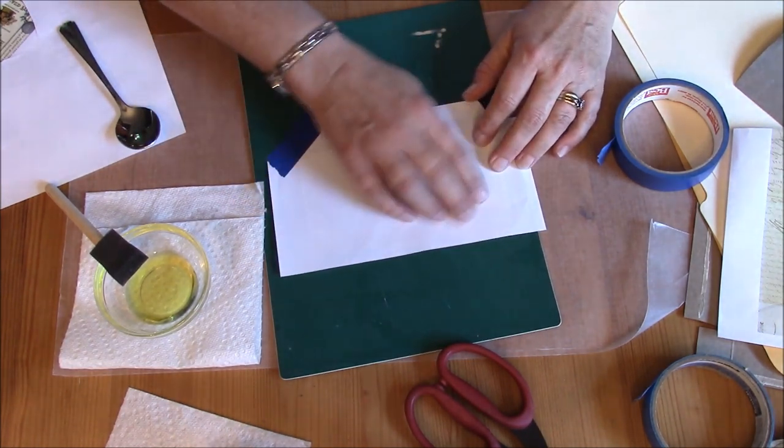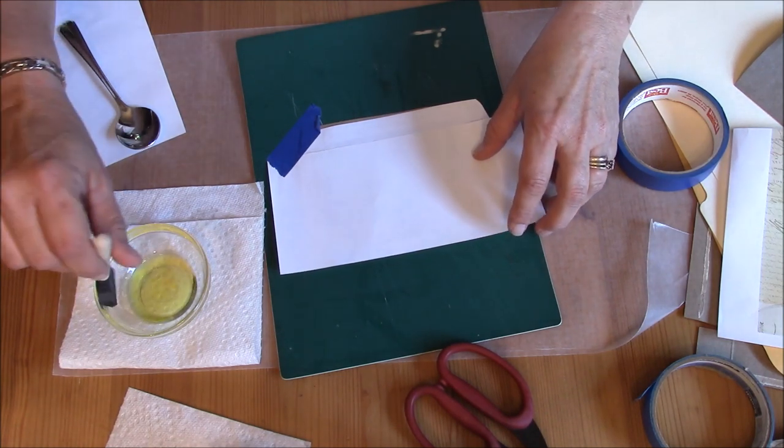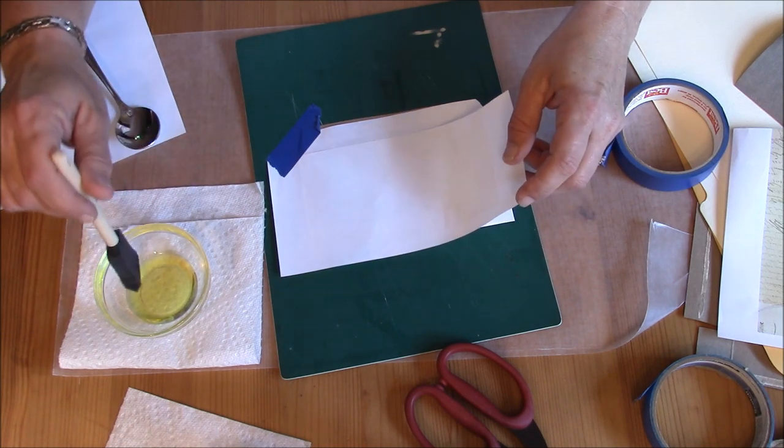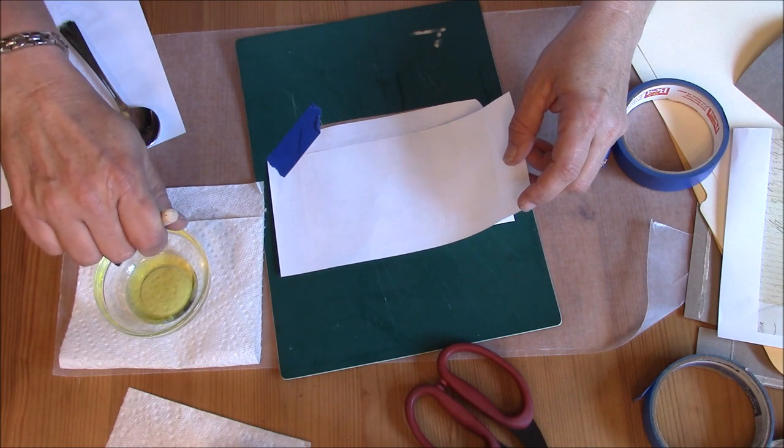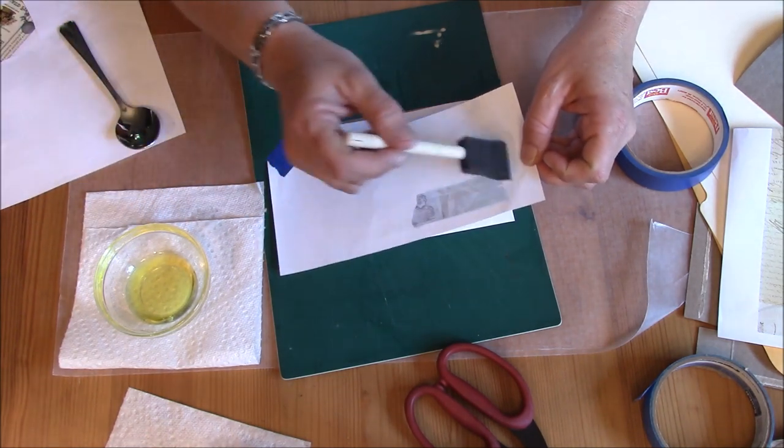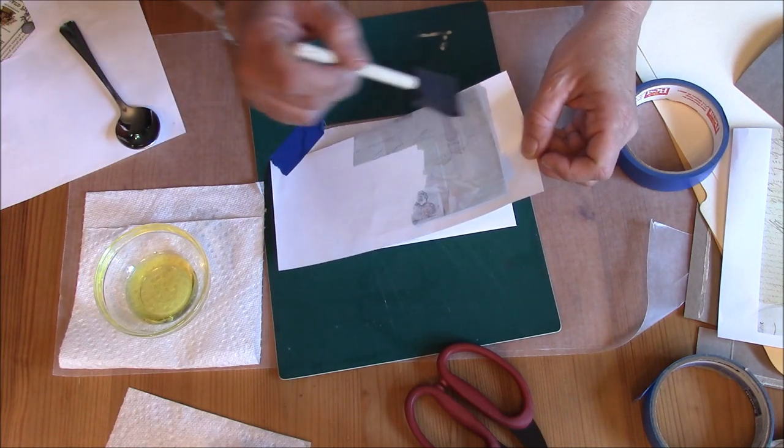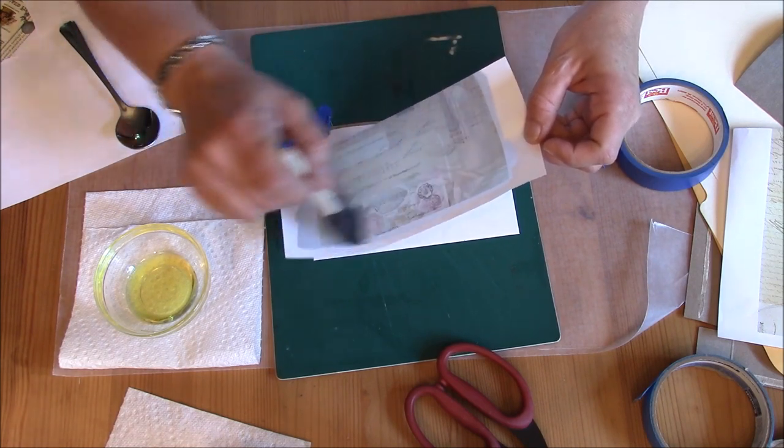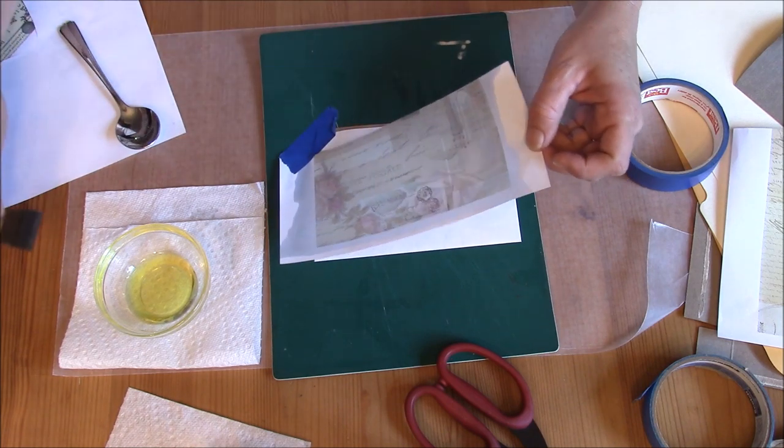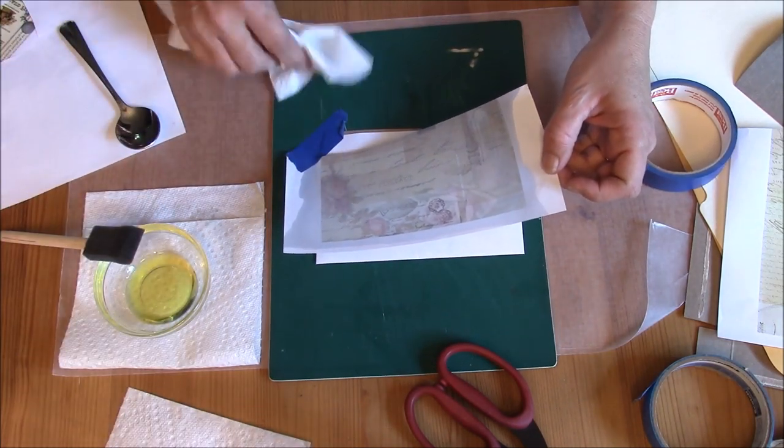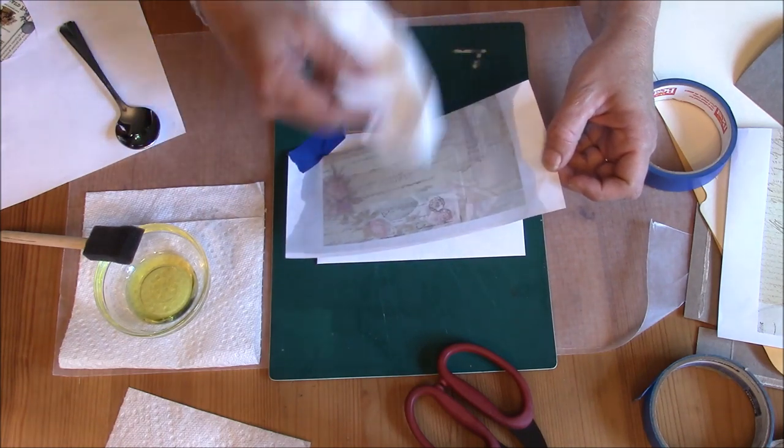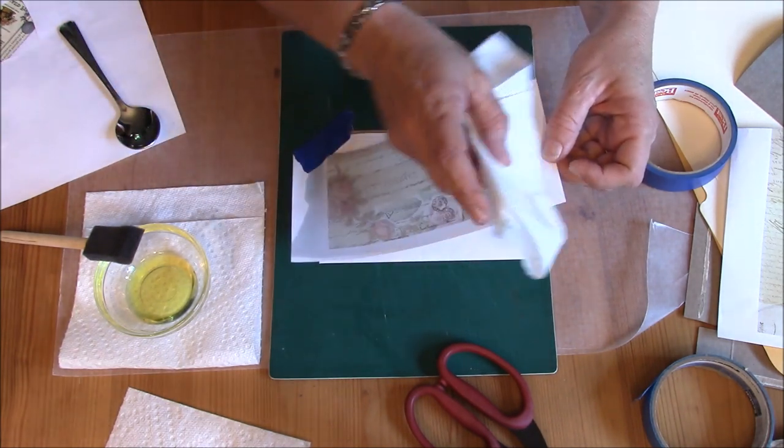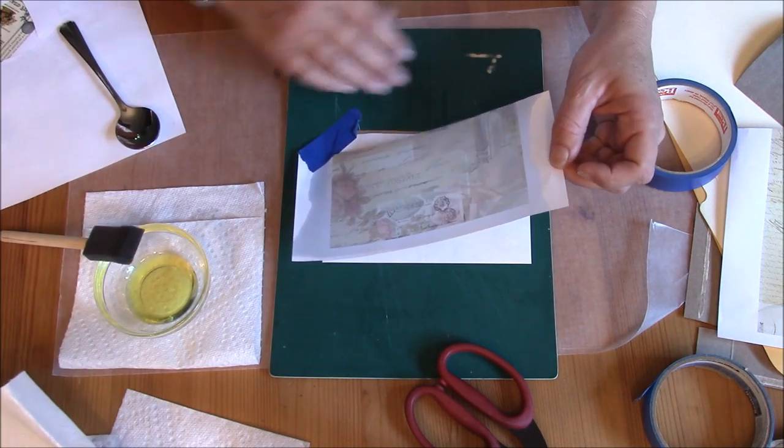I can lift it and not lose any of the image on the front face of the envelope. Again, I'm dipping it in, getting off some of the excess, and I'm just brushing across the top of the paper so I can see the image. I'm going to blot some of that off.